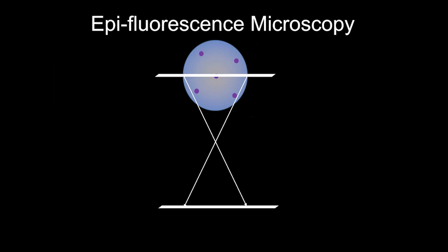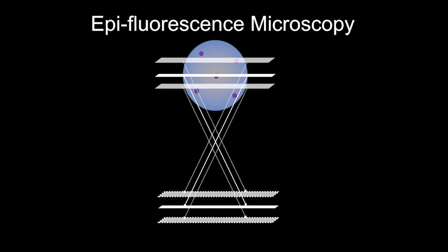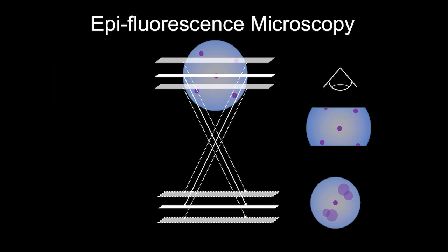So when you want to image thicker samples, most people come and ask for confocal. In epifluorescence, the objective focuses on one plane in a thick sample, but light from other planes also hits the detector — unfocused — creating blur. You get a really fat optical section; the fluorophores above and below your focal plane contribute blurred light. Confocal microscopy was born to solve this.